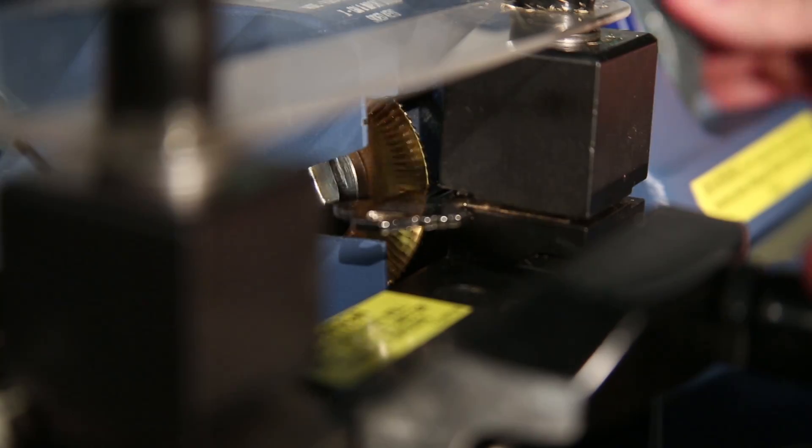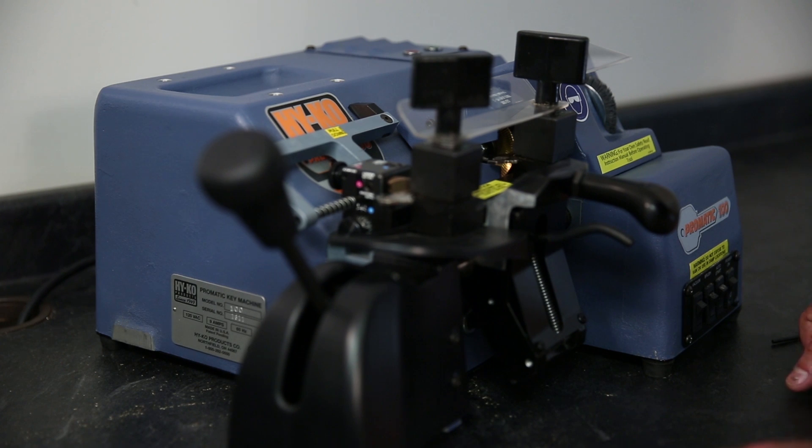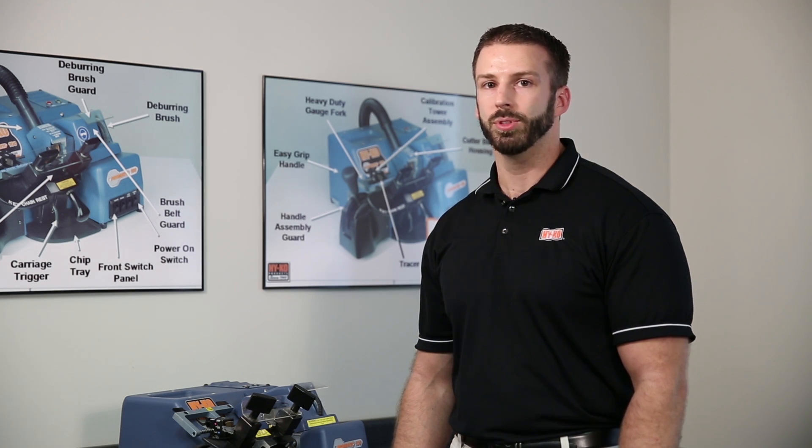If the grinding is consistent, the depth calibration is set correctly, and the calibration of the PROMATIC 100 is complete. Be sure to cut a few test keys to make sure that the machine is cutting properly after you've run through the calibration steps. If the keys are not working after being cut, repeat the calibration steps as necessary.